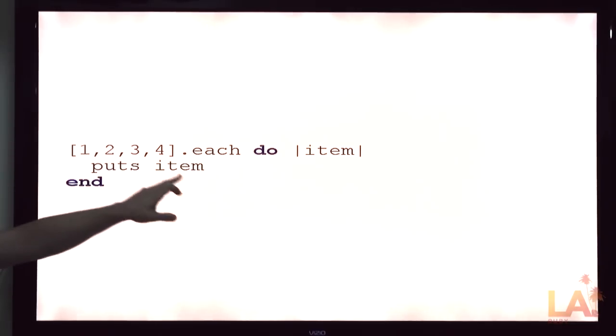And this is the Ruby version. There's the array. I want each of them. There. Done. We don't have to maintain an index or anything.